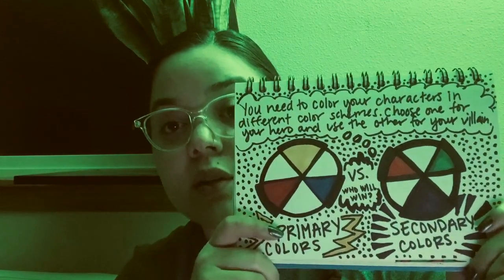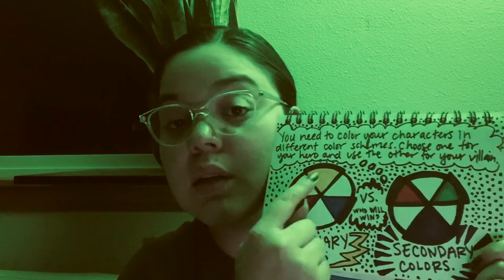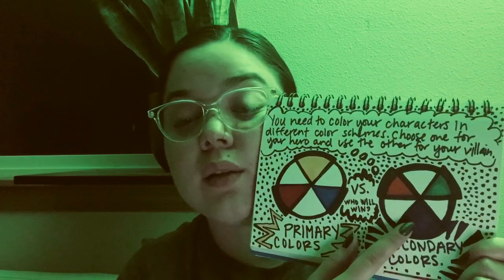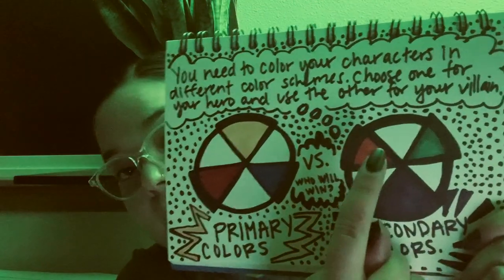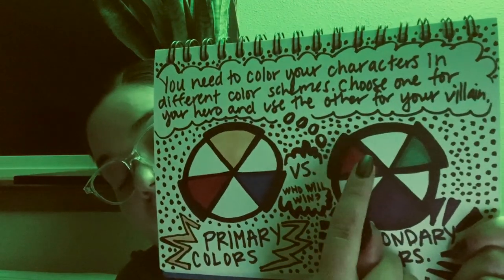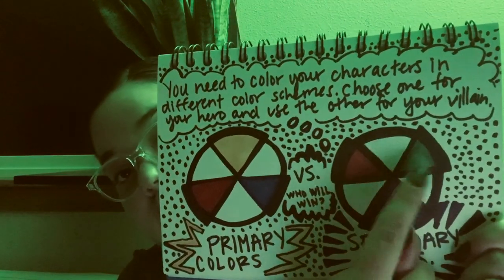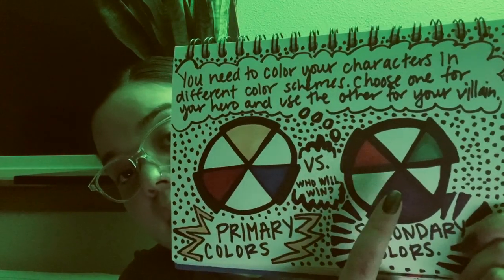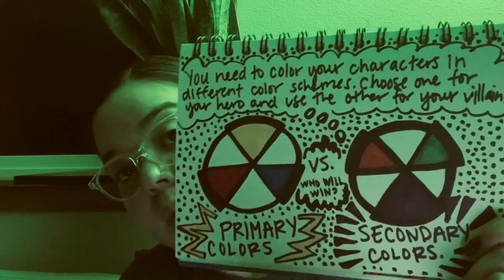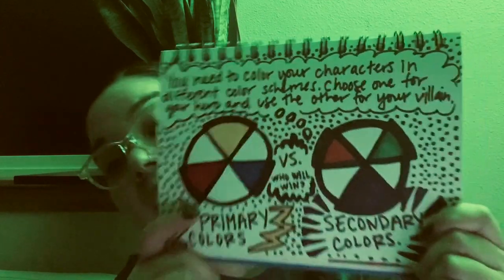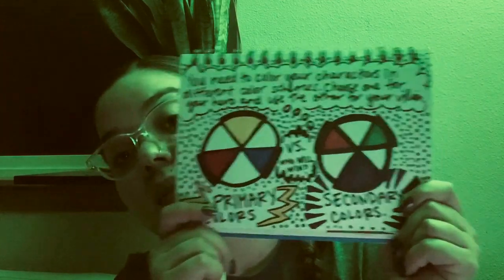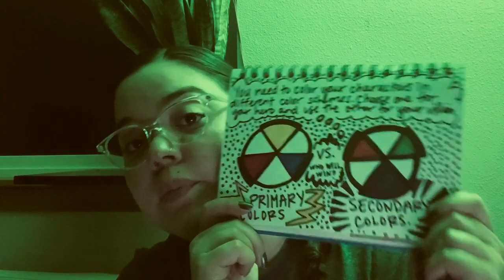The secondary colors are the colors that are created when you combine some of the primary colors, so they come second. We have orange, green, and purple — also known as violet. It's actually violet; that's its real name.